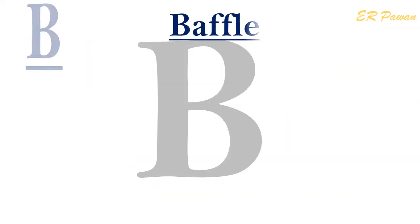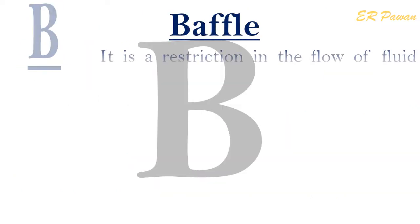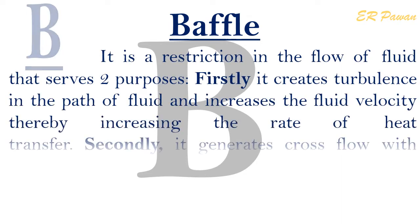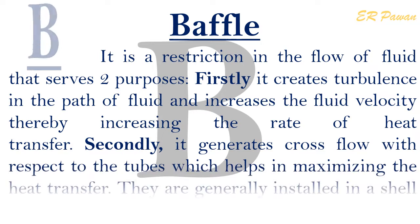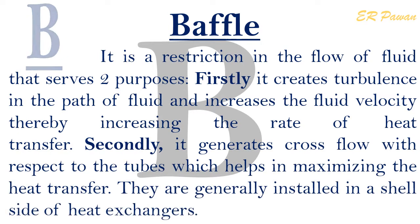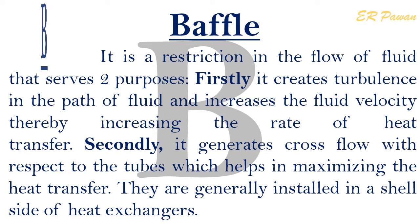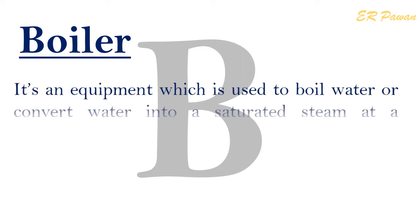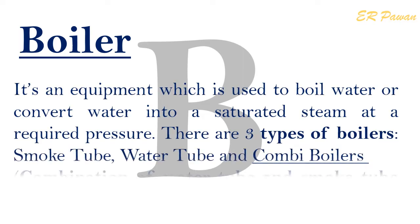B — Baffle: It is a restriction in the flow of fluid that serves two purposes. Firstly, it creates turbulence in the path of fluid and increases the fluid velocity, thereby increasing the rate of heat transfer. Secondly, it generates cross flow with respect to the tubes, which helps in maximizing the heat transfer rate. Baffles are generally installed on the shell side of heat exchangers.